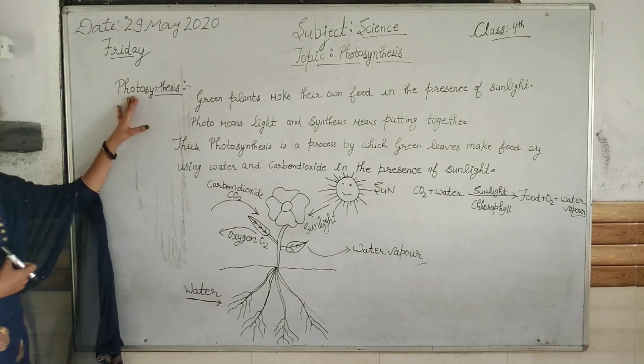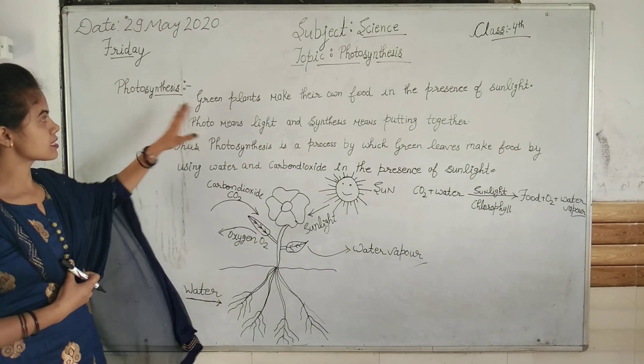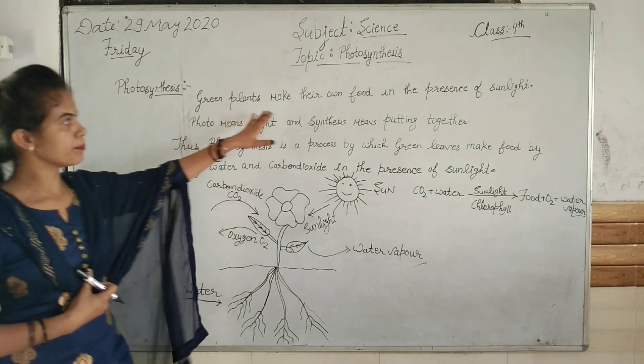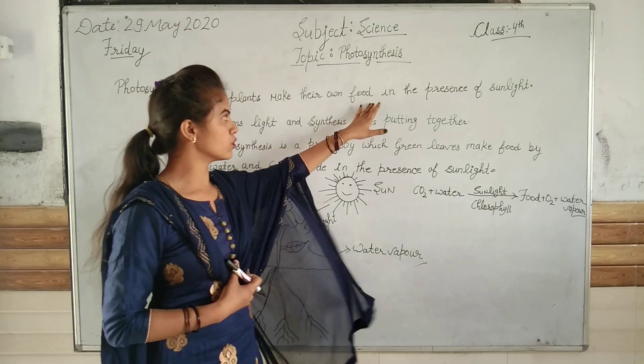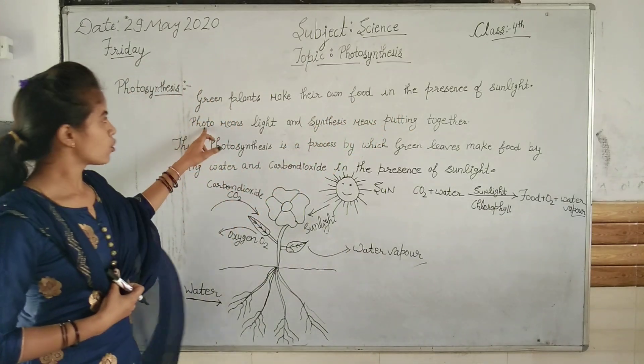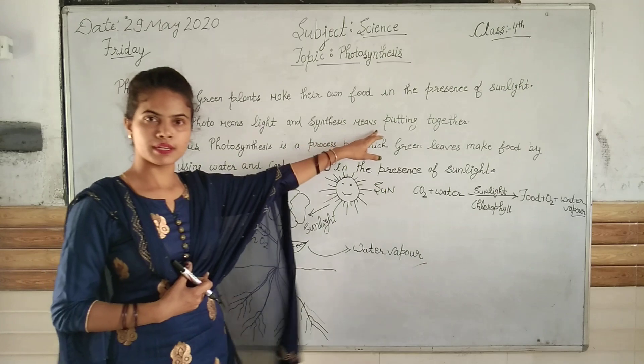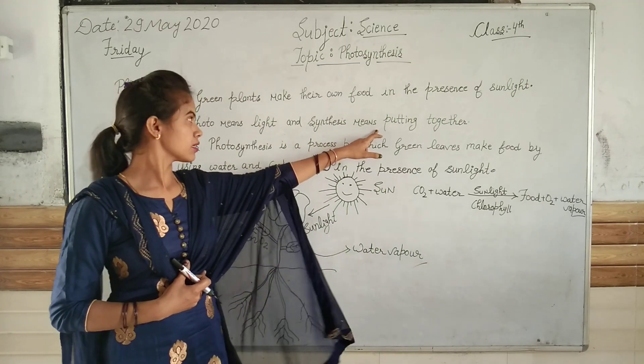What is photosynthesis? Photosynthesis is when green plants make their own food in the presence of sunlight. Photo means light and synthesis means putting together.